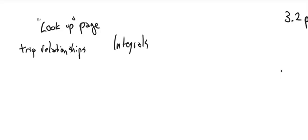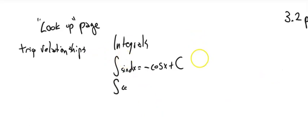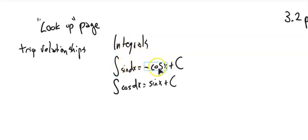Some of these we already know. We know the integral of sine is negative cosine plus some constant. The integral of cosine is sine. Remember your integrals are also a derivative lookup — going one way is an integral, and going the other way is the derivative.